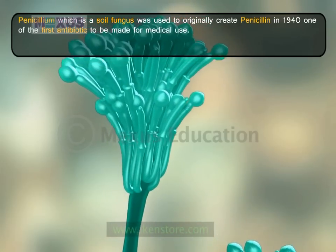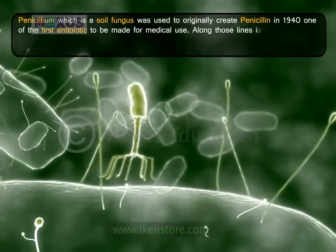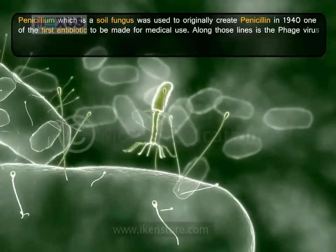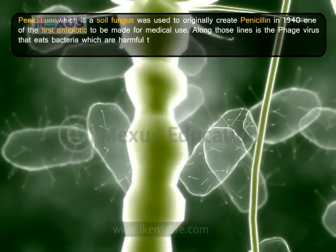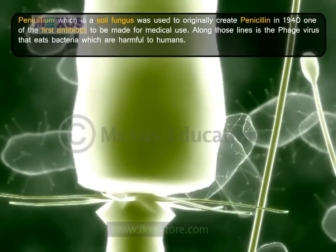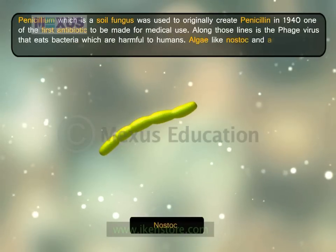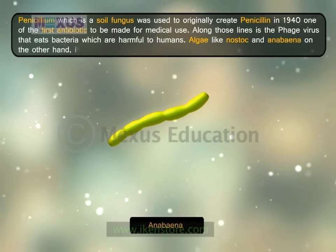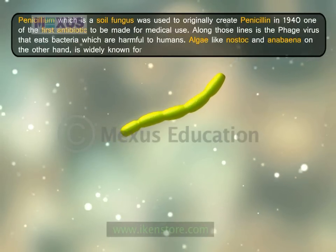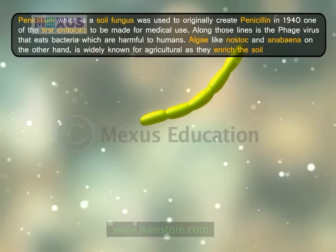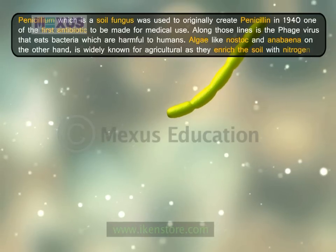Similarly, Penicillium, which is a soil fungus, was used to originally create penicillin in 1940 — one of the first antibiotics to be made for medical use. Along those lines, the phage virus eats bacteria which are harmful to humans. Algae like Nostoc and Anabaena are widely known for their agricultural benefits, as they enrich the soil with nitrogen.